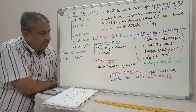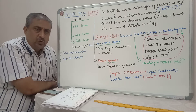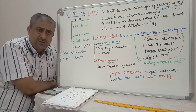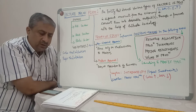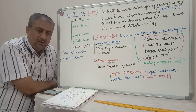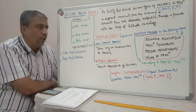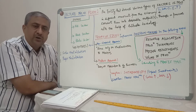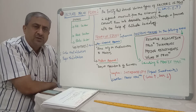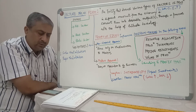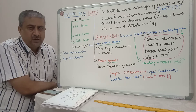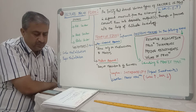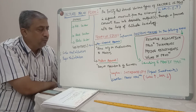Public sector firms are owned, managed, and controlled by the government. Examples of public sector undertakings include NTPC, SAIL, and BSNL. Forms of public sector firms include corporations or boards — such as Khadi Village Industries Commission, Food Corporation of India, and railway boards — as well as departments like the health department, education department, and post and telegraph department.